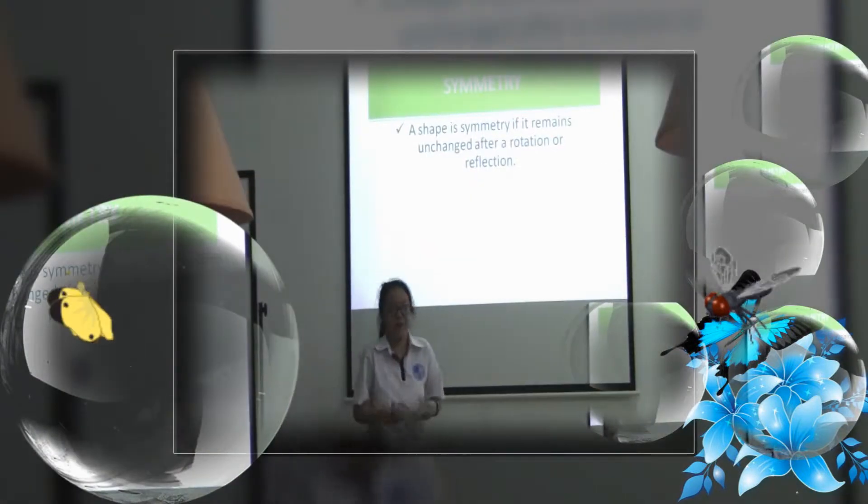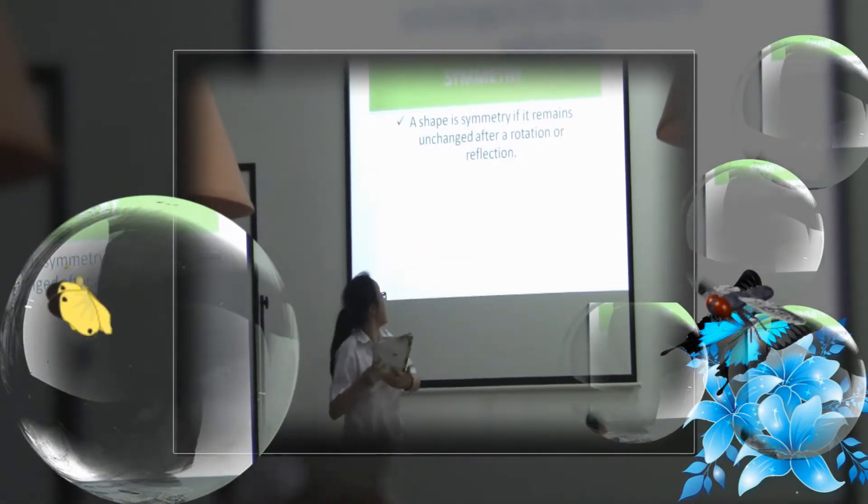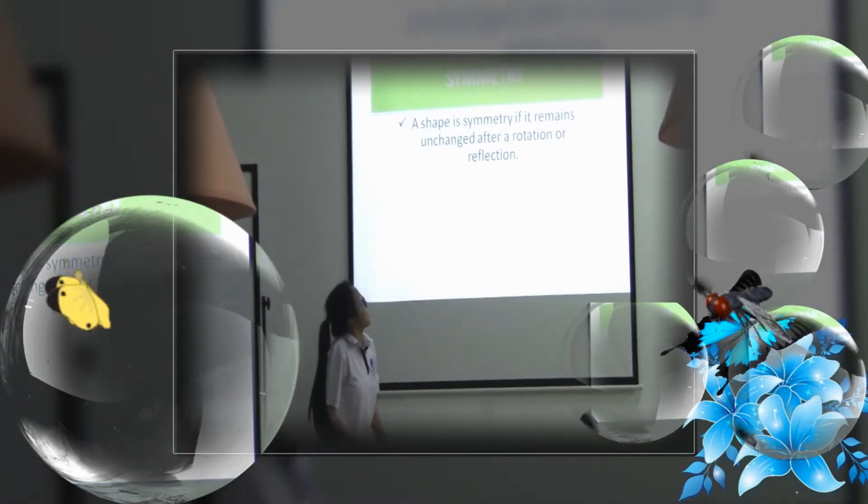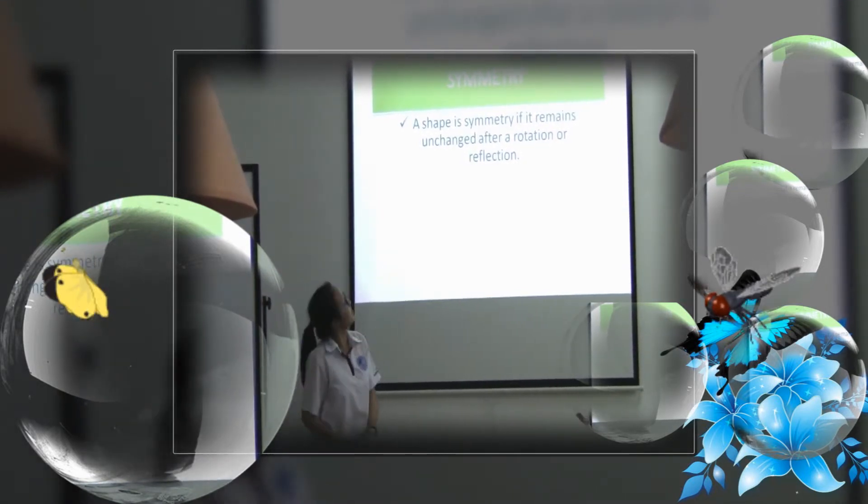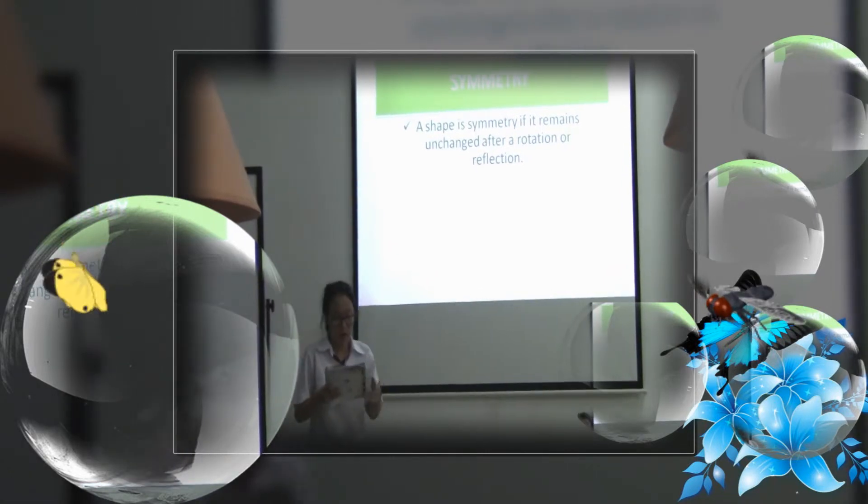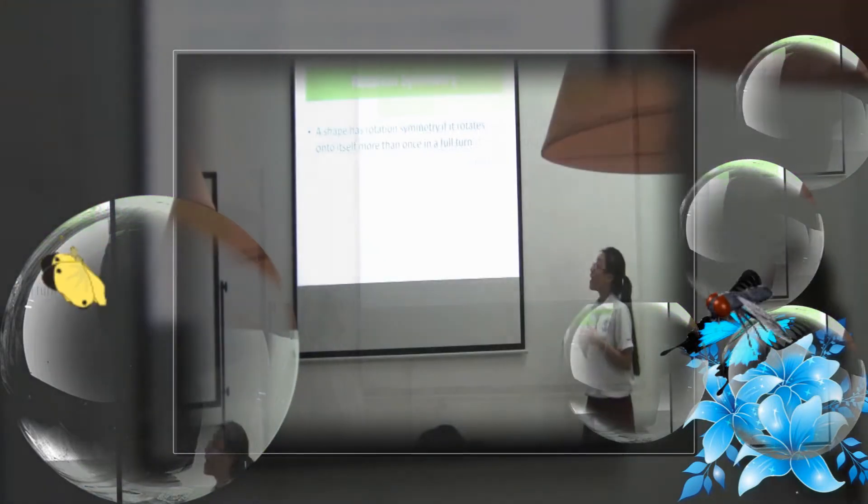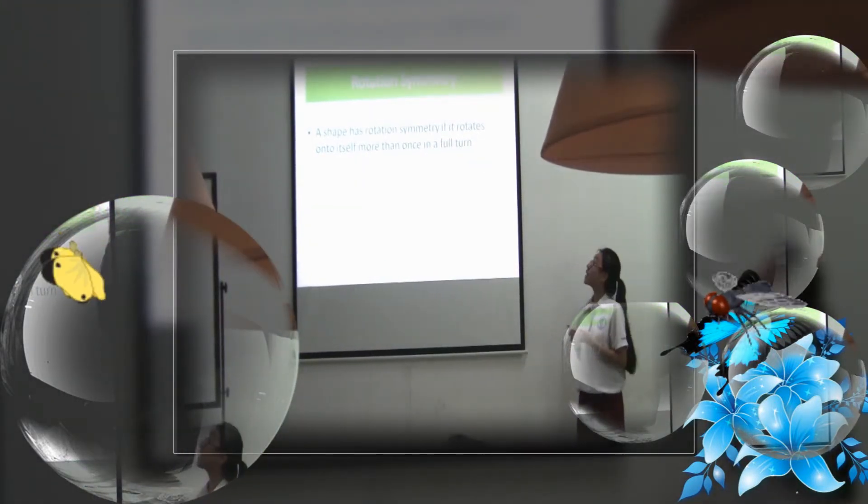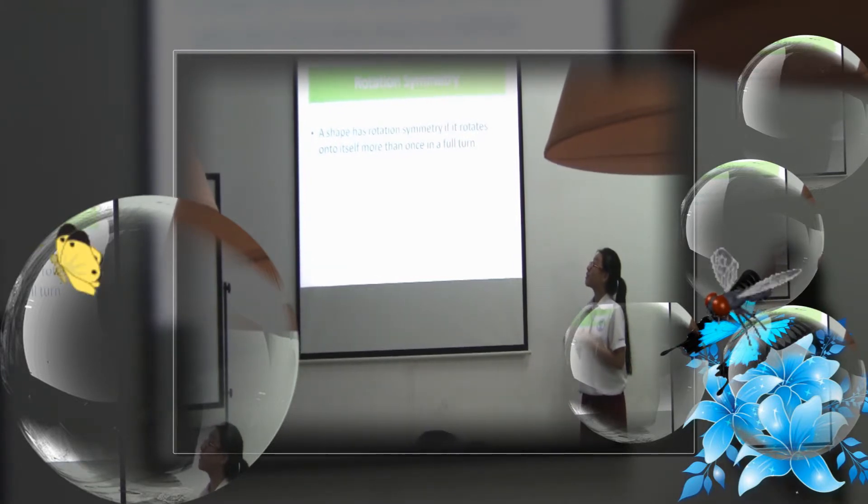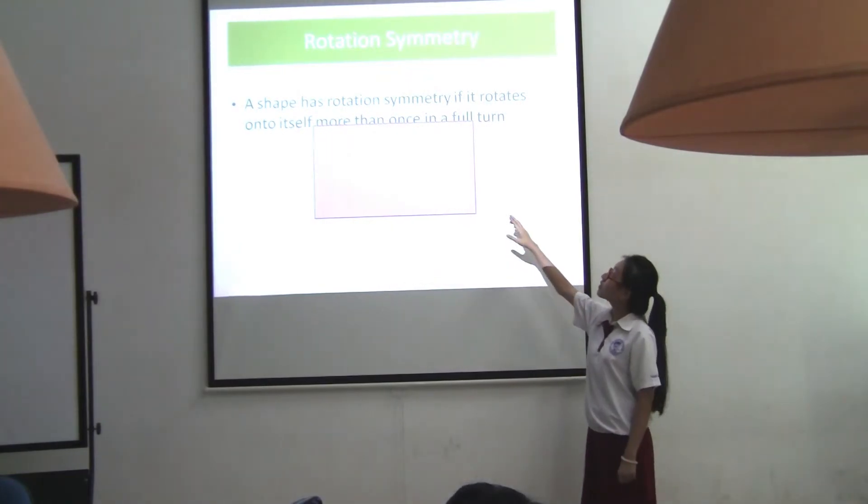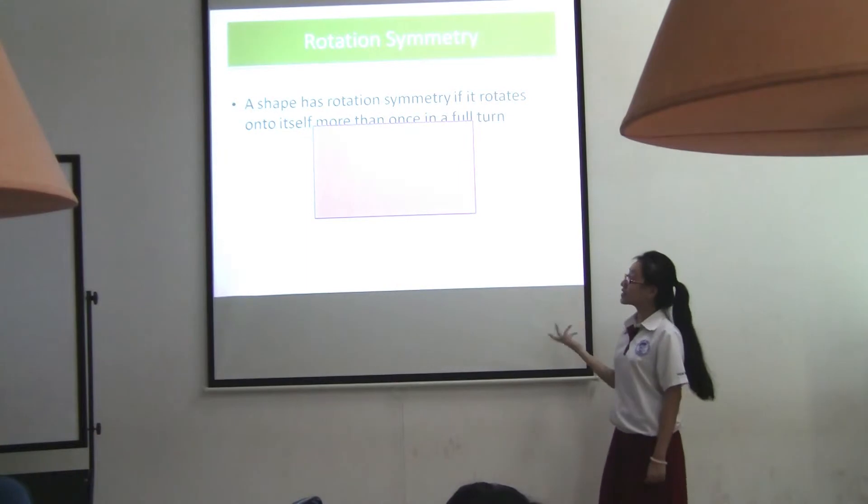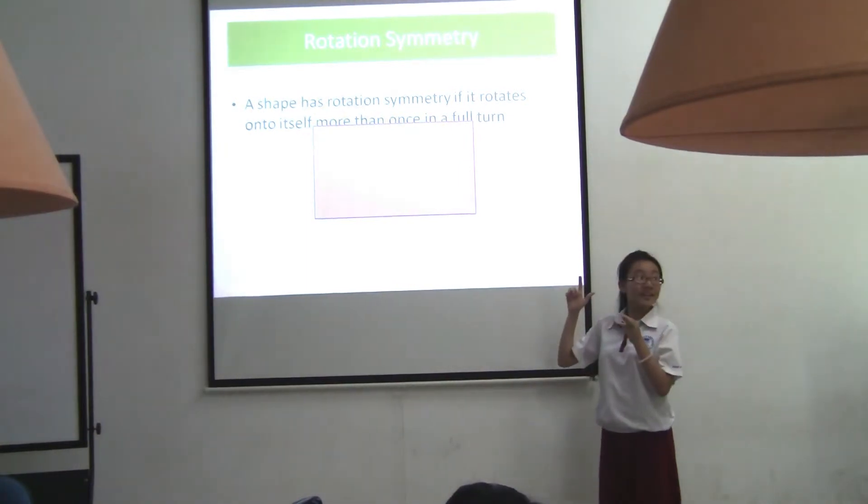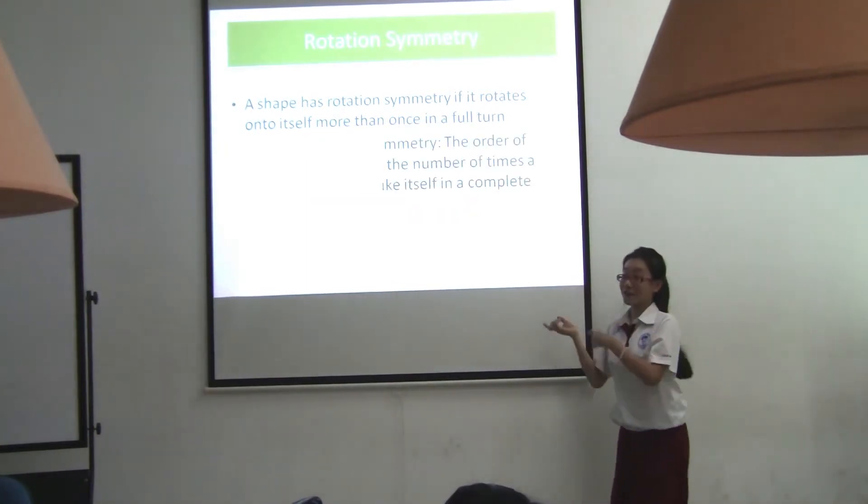First, I want to talk about what is symmetry. Is this a shape? A shape has rotation symmetry if it looks the same more than once in a full turn. If you rotate in a full turn, it's gonna be the same.